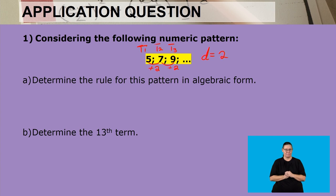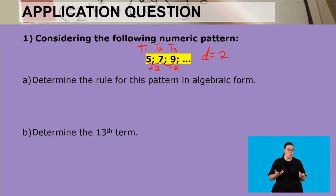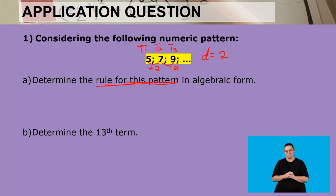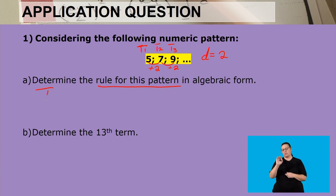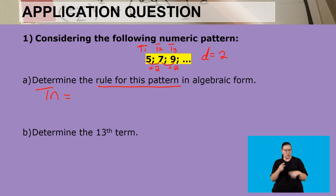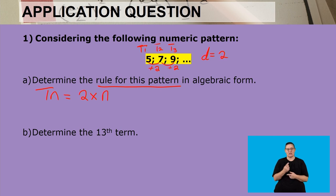We found that 2 by saying 7 minus 5, which is how we calculate our constant difference — the second term minus the first term, or the third term minus the second term. Now let's find the rule for this pattern. When we have a constant difference, we need to find the relationship between the constant difference, the term number, and the term itself. We take the term number, multiply it by the constant difference, and then add or subtract a constant value.